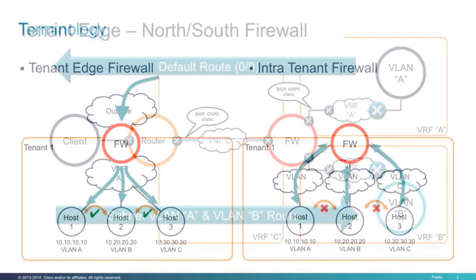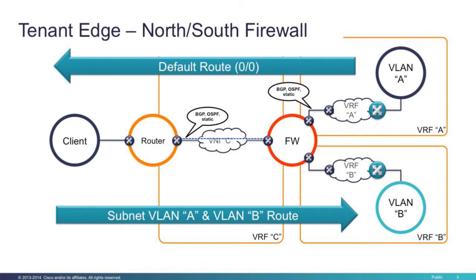The first use case is the tenant edge or north-south firewall. Looking at north-south traffic, we have a host outside of the network wanting to access a resource within the network, represented here with VLAN A or VLAN B. VLAN A and VLAN B are placeholders for a given subnet. A client wants to access our data center fabric and will hit the router where the data center is connected — sometimes called the border leaf or border spine depending on placement — and at that point we are entering the data center.